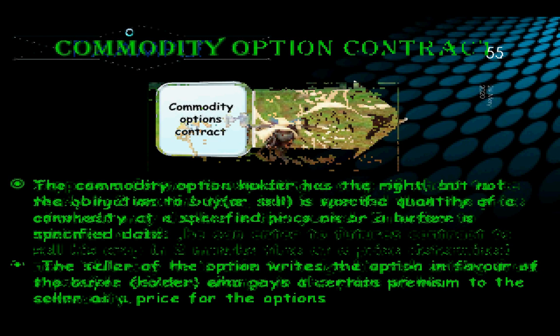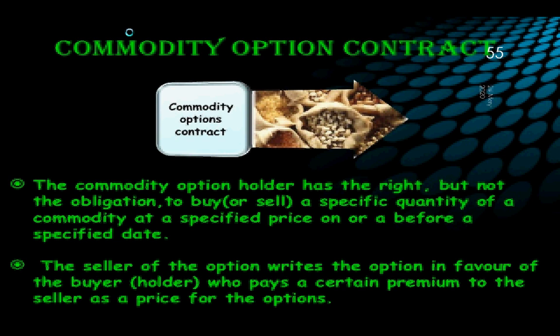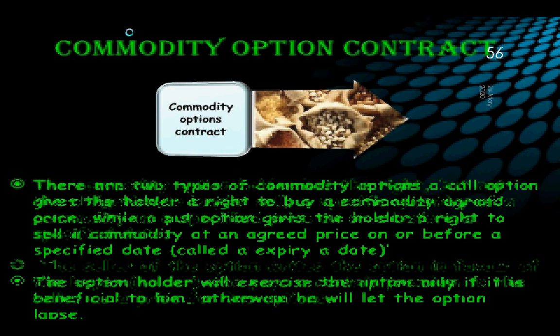The second derivative is the commodity options contract. The commodity option holder has the right, but not the obligation, to buy or sell a specific quantity of a commodity at a specified price on or before a specified date mentioned in the option. The seller of the option writes the option in favour of the buyer, who pays a certain premium to the seller as a price for the options. There are two types of commodity options: one is the call option and another is the put option.